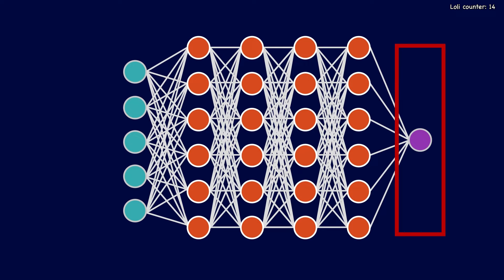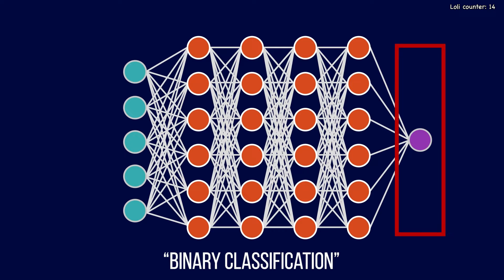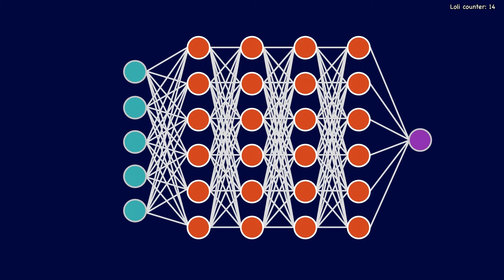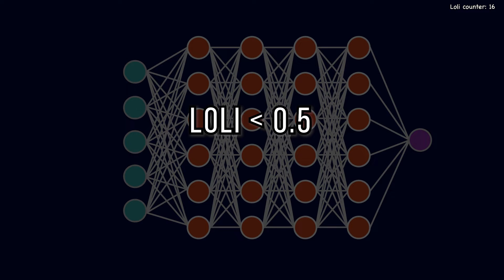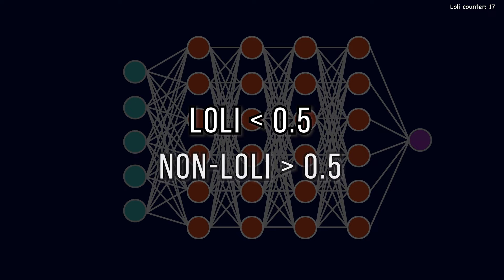In this specific case, known as binary classification, the output will be a number between 0 and 1. If the model outputs a 0, that means it is 100% confident that the waifu is a lolly. Conversely, if it outputs 1, it's 100% confident it's not a lolly. So any value below 0.5 we classify as a lolly, and any value above 0.5 is classified as a non-lolly.